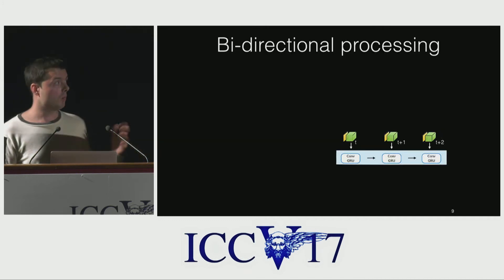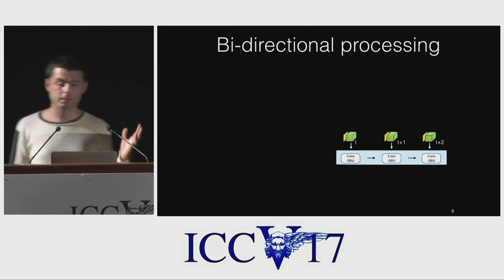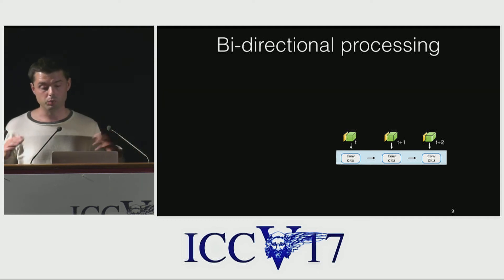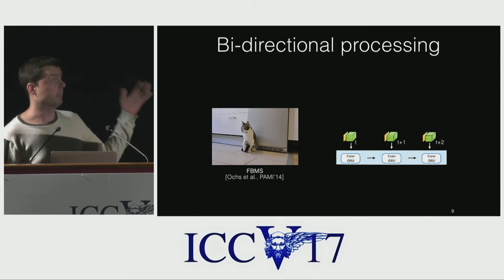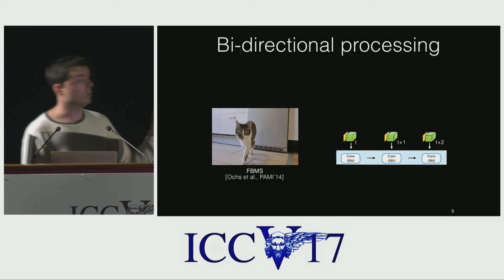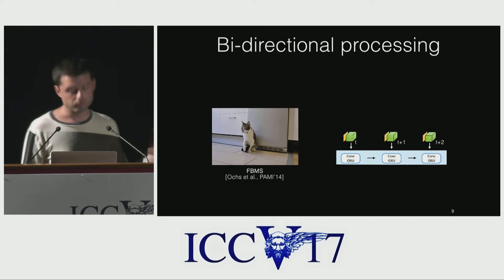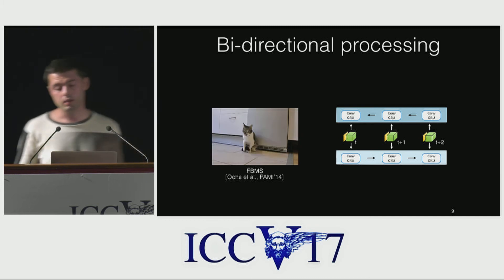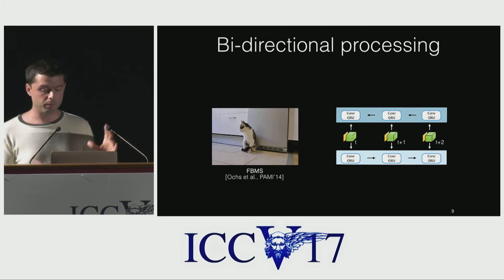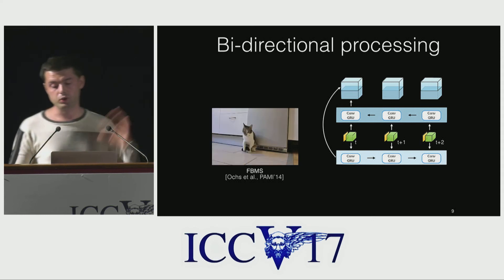To sum up, our model processes a video frame by frame. For each frame, it extracts motion and appearance information, concatenates them, and passes to the ConvGRU, which aggregates a spatial-temporal representation of the moving object. However, consider a video of a cat that is mostly static in the beginning and only starts to move later. A purely feed-forward model would clearly fail. Thus, we apply our ConvGRU also in the backwards direction, from the last frame to the first. The representations produced by both ConvGRUs are then concatenated to produce segmentation in every frame, taking the whole video into account.